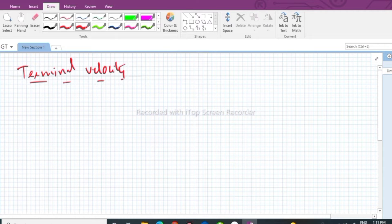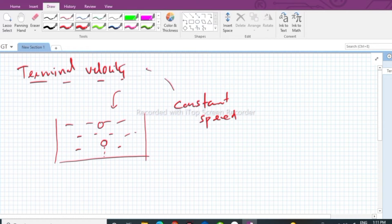Now let us first understand what is terminal velocity. Suppose I take a container and I drop an object inside this. Initially what happens is this object goes at a higher speed. After some time, the object attains a constant speed. That constant speed is called terminal velocity.